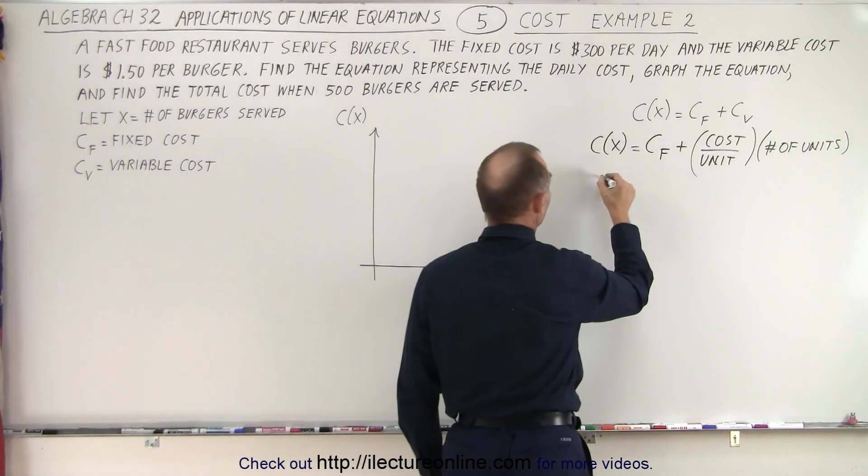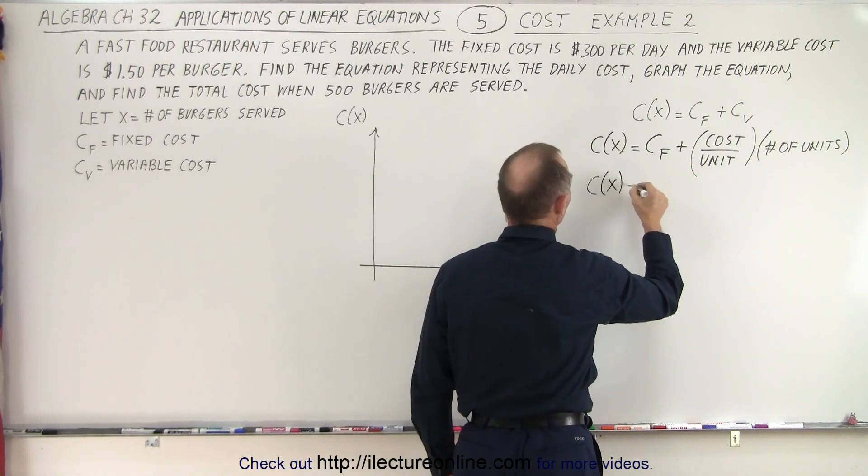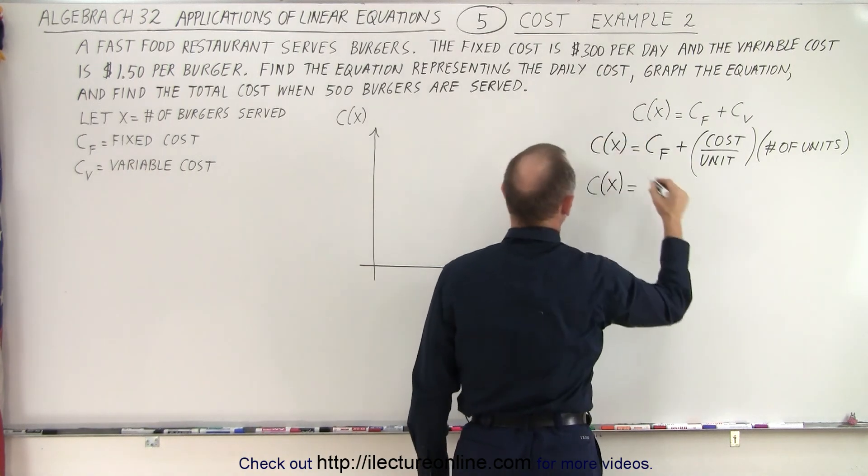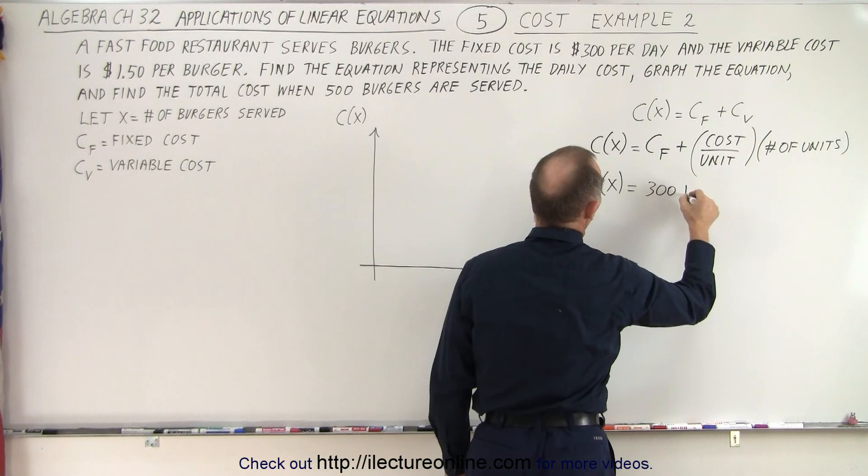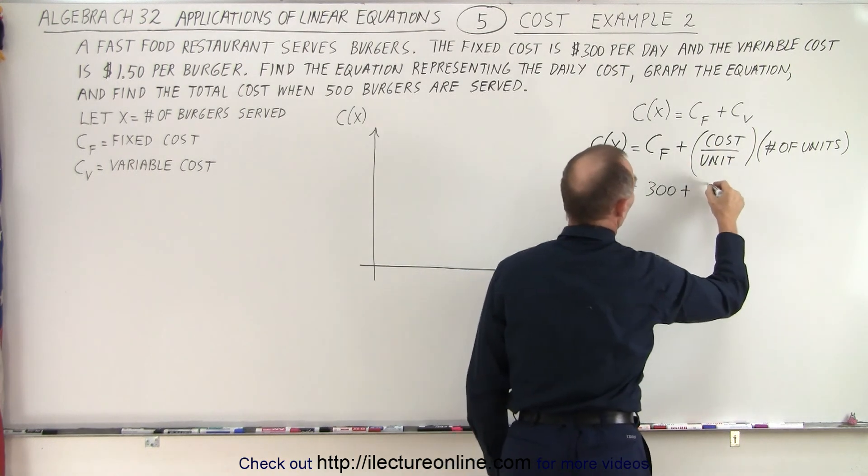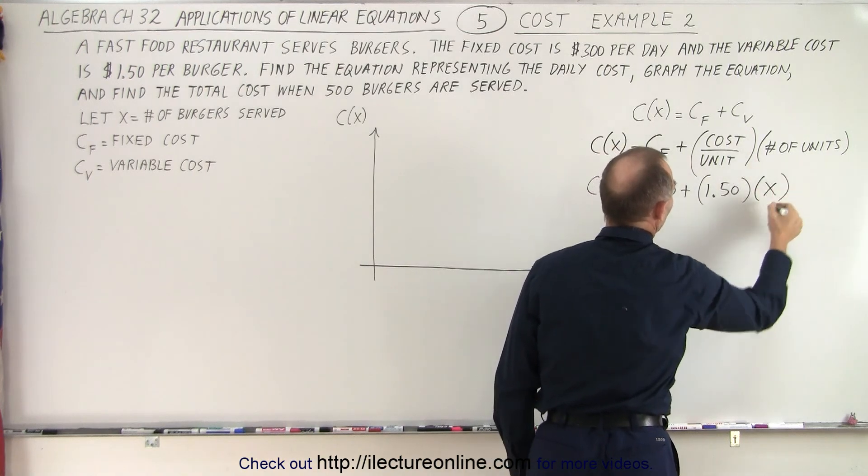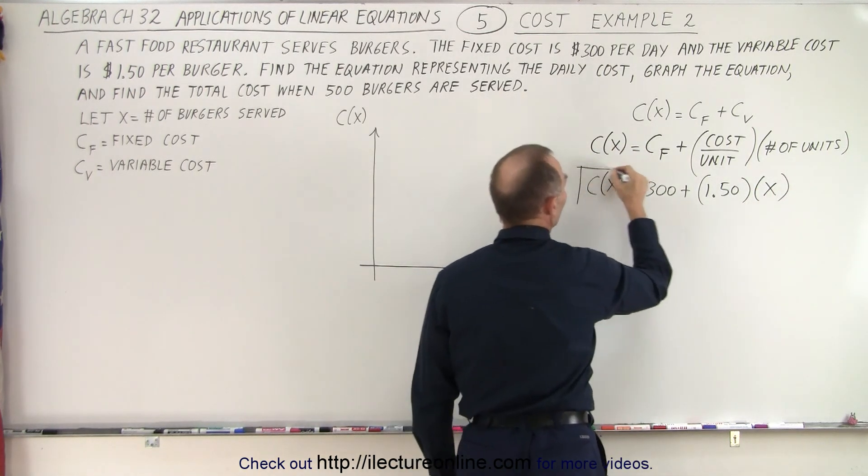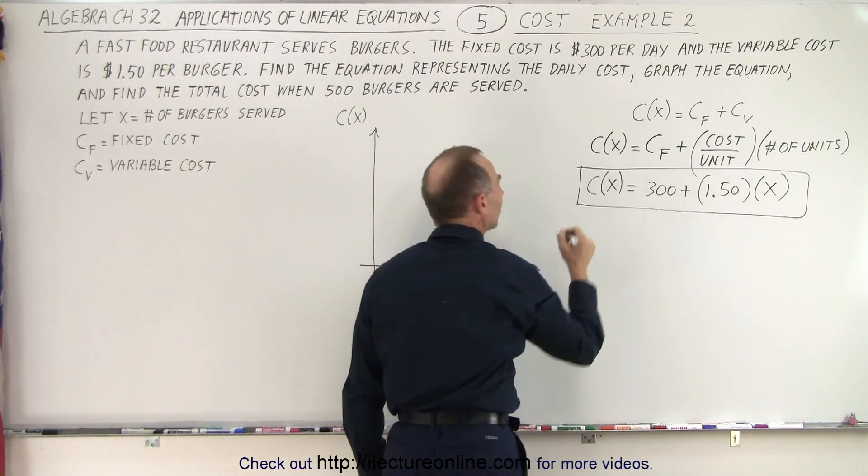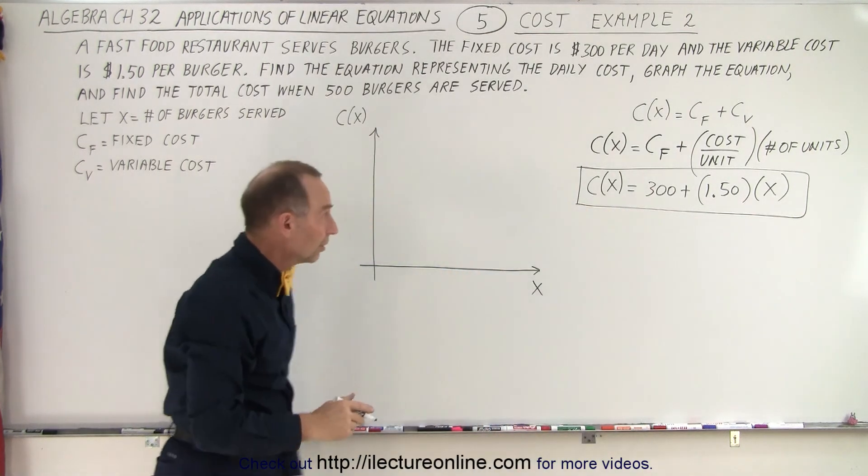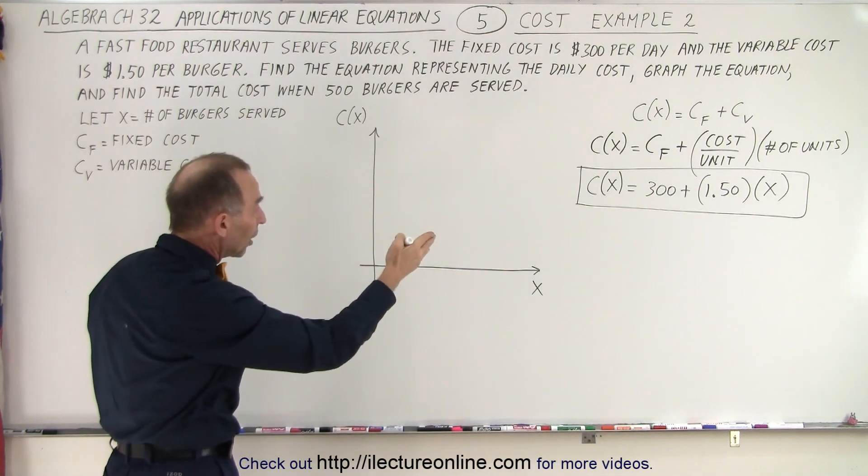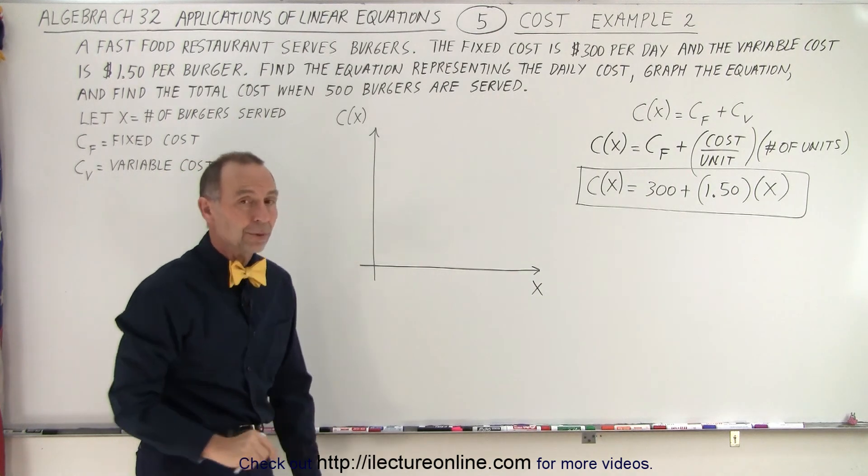And so we can then write that the total cost is going to be the fixed cost which is $300, plus the cost per unit which is 1.50 times the number of units which can be represented by x. And so here we have the equation that represents the total cost for making x number hamburgers.